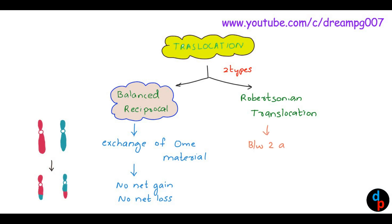Whereas in Robertsonian translocation, it happens between two acrocentric chromosomes and it will lead to one abnormally large chromosome and one abnormally small chromosome.